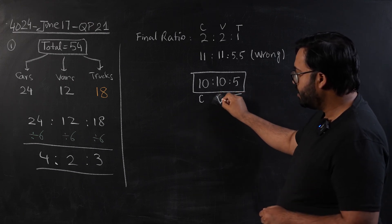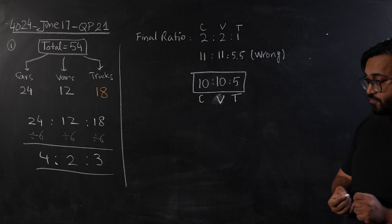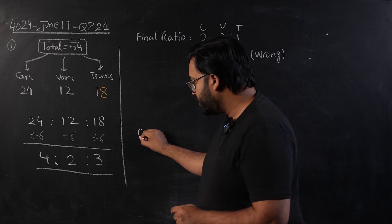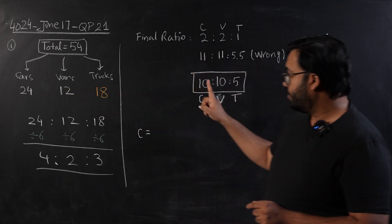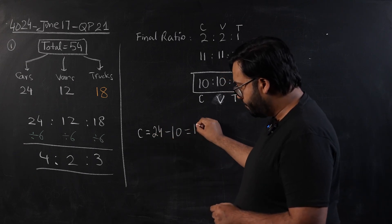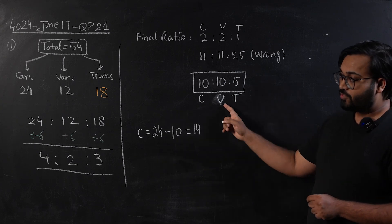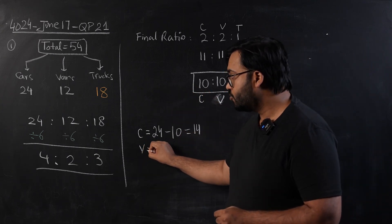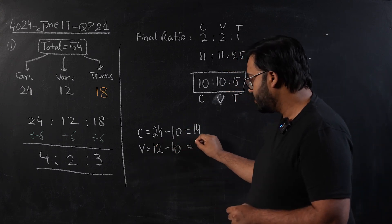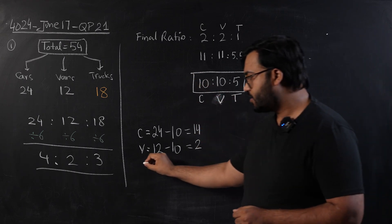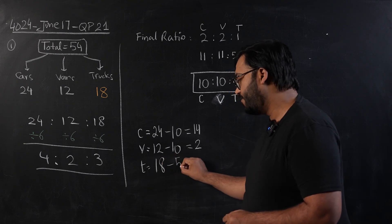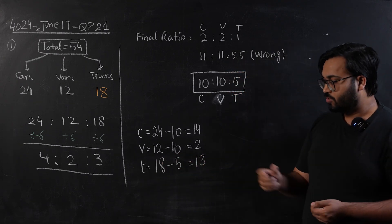The answer for C, V, and T was basically the number of things that he has sold. Number of cars he has sold is 24 minus 10, so he has sold 14 cars. V was representing the number of vans he has to sell: he had 12 vans, now he has 10 vans, so 12 minus 10, he has 2 vans to be sold. For number of trucks, the value of T is 18 minus 5, which is 13.